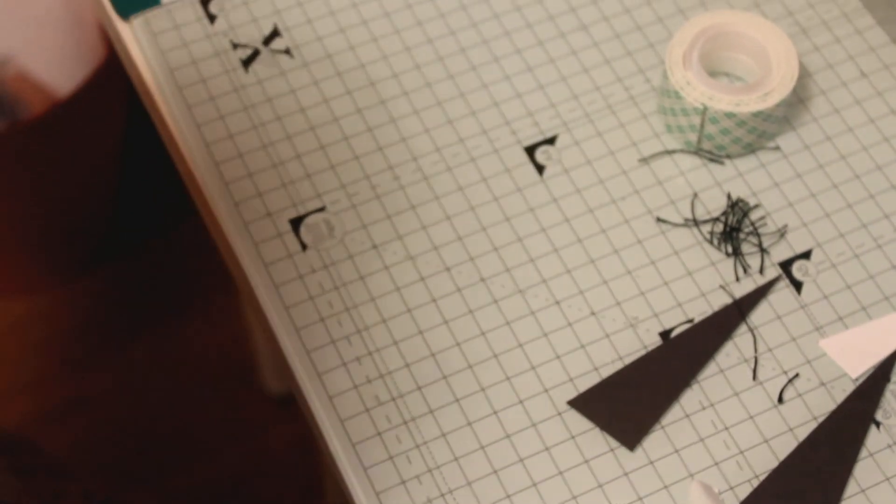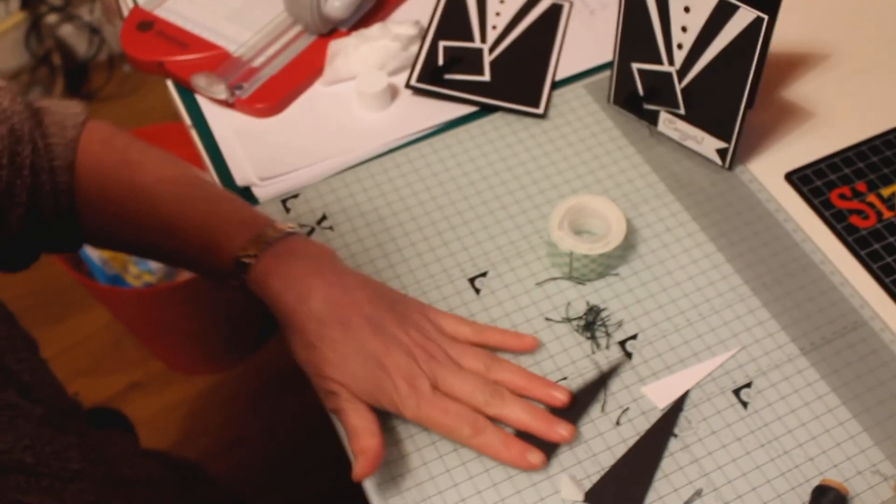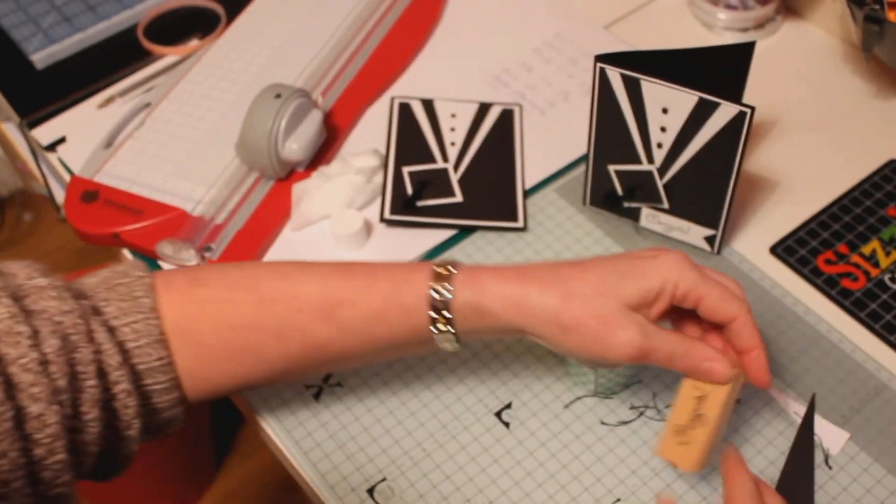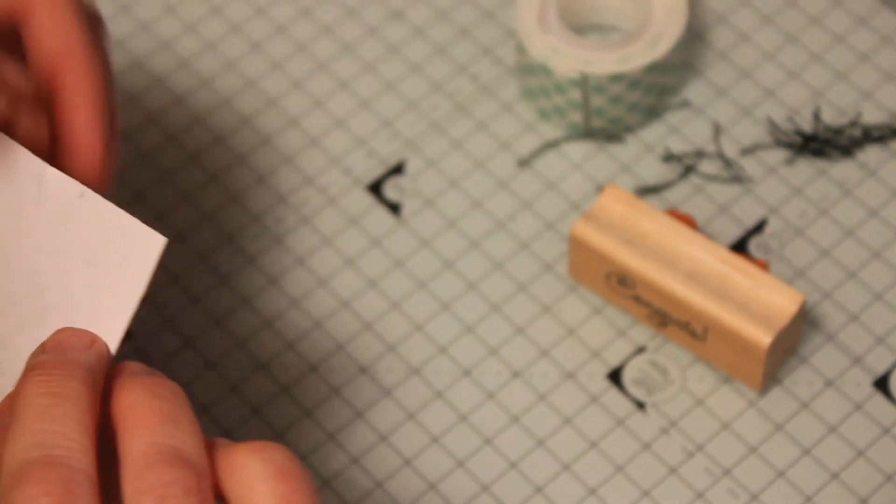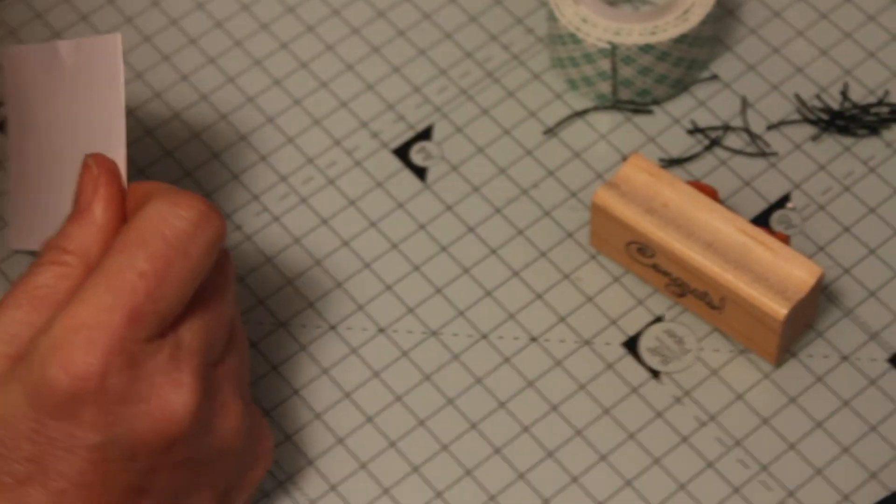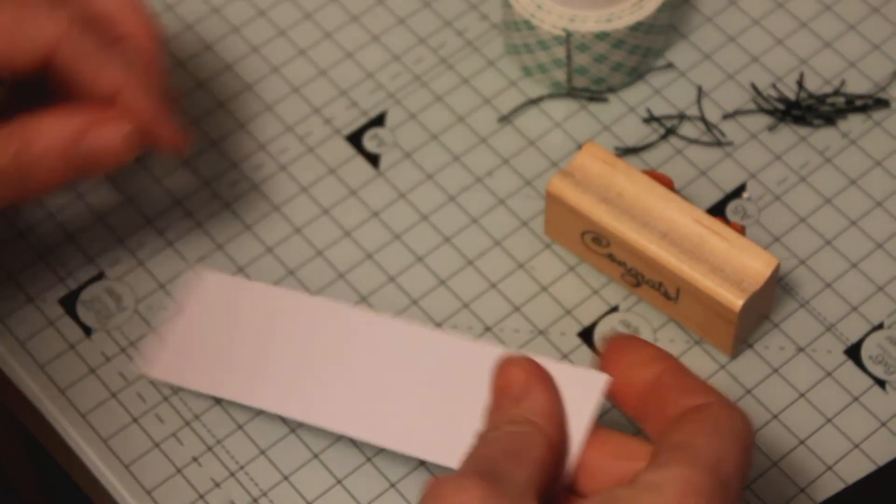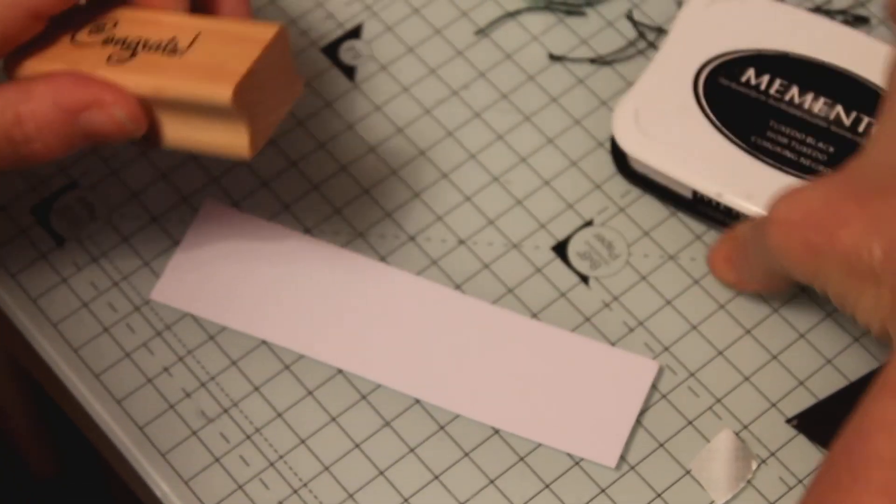And all that's left to do then is the sentiment. And I'm just using the congrats. And I'm going to stamp that onto a piece of white cardstock. And I'm using Memento Tuxedo Black ink.